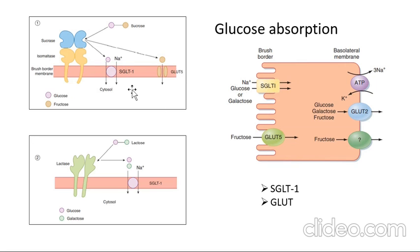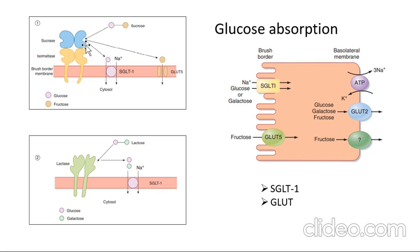These disaccharidases are situated in the brush border epithelium, embedded in the cell membrane. For example, sucrase splits sucrose into glucose and fructose. Fructose can directly go via passive transport through GLUT channels. Glucose is transported into the cell and then via underlying blood vessels into the blood for energy transport to various body parts. Similarly, lactase splits lactose into glucose and galactose.